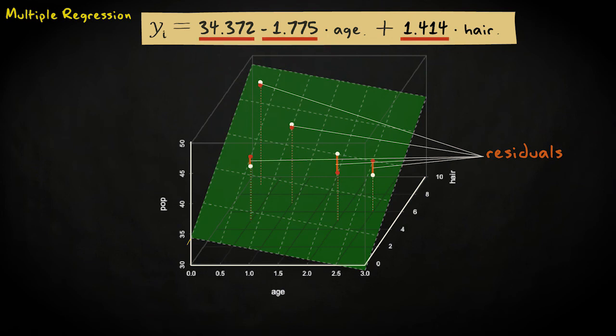Just like in simple regression, the residuals are minimized using the method of ordinary least squares. Because the resulting formulas for the intercept and regression coefficients are more complicated, we'll use statistical software to calculate them.